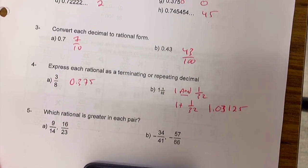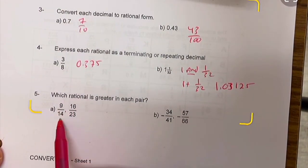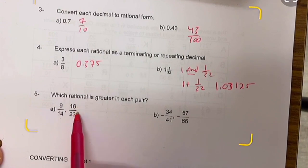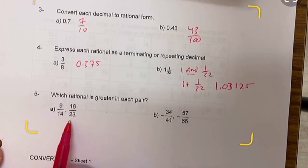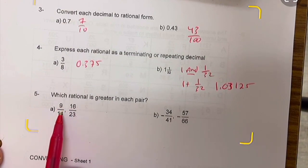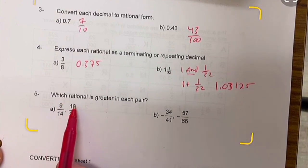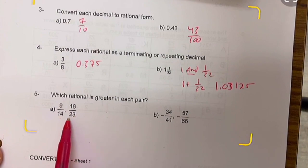Which rational is greater in each pair? 9 over 14, 16 over 23. I always think in terms of the halfway point. 9 is just a little bit more than half of 14. Half of 14 would be 7, so it's a little bit more than that. Now 16 over 23, if you half 23, that's quite a bit more over it.